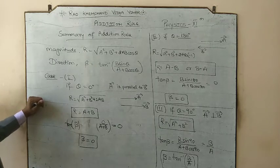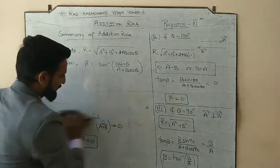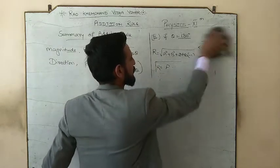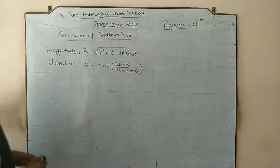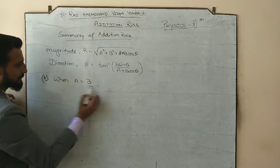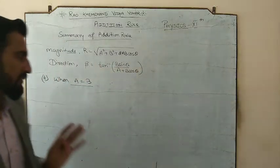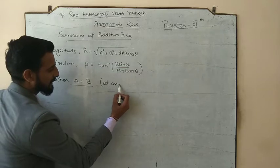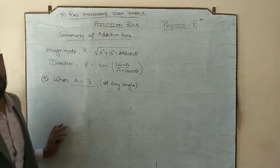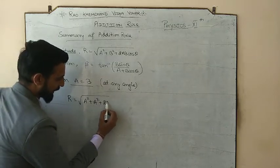So we have discussed the three important cases: when θ = 0, when θ = 180°, and when θ = 90°. Now at last, one of the most important results from vector addition — Case 4: when a = b, meaning the magnitudes of the two vectors are equal, at any angle theta. Then r = √(a² + a² + 2a²cosθ) = √(2a²(1 + cosθ)) = a√(2(1 + cosθ)).